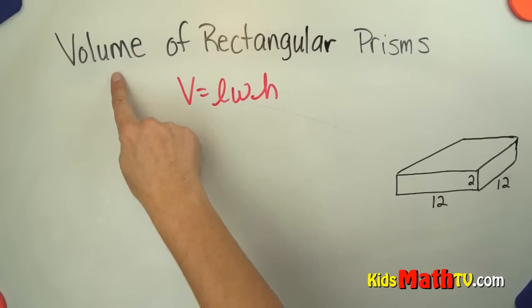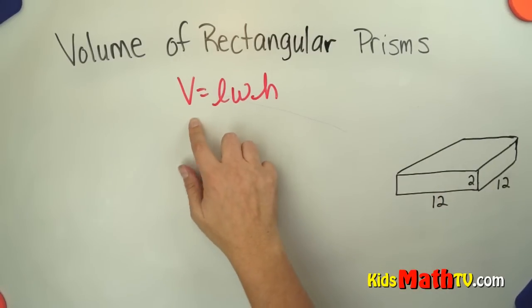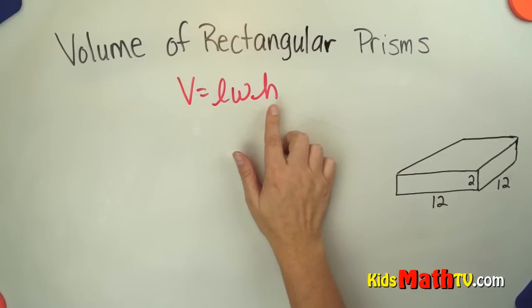In this lesson you will learn about the volume of a rectangular prism. The formula is volume equals length times width times height.